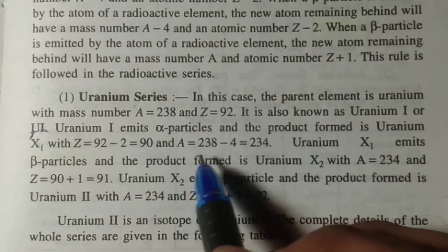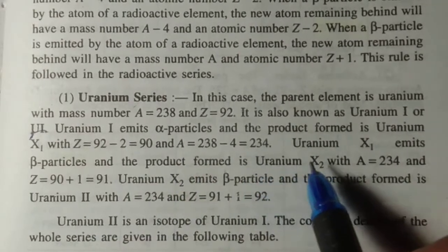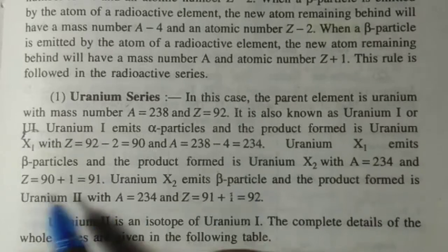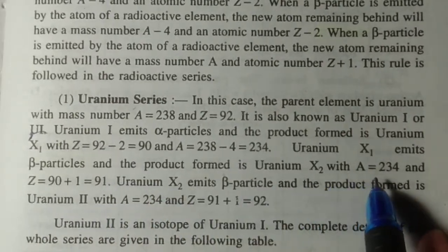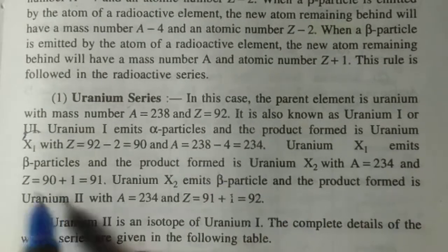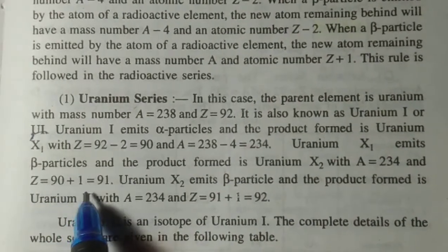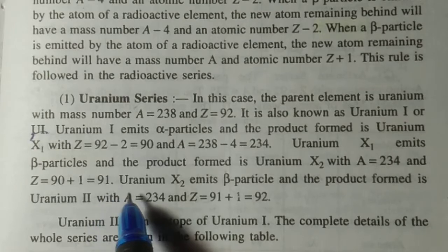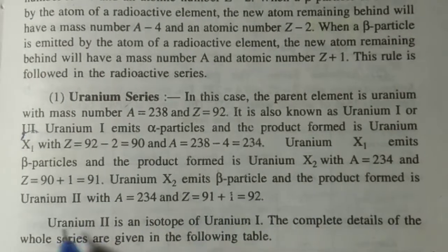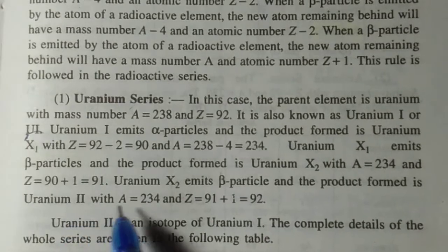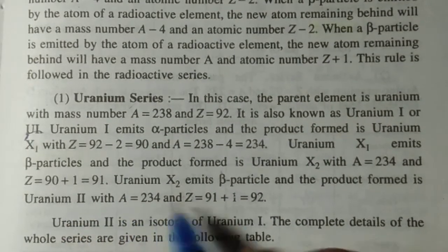Uranium X1 has Z equal to 90 and A equal to 238 minus 4 equal to 234. Uranium X1 emits beta particles and the product formed is uranium X2 with mass number 234 and Z equal to 92. Uranium X2 now emits beta particles and the product formed is uranium second with mass number 234 and Z equal to 92.